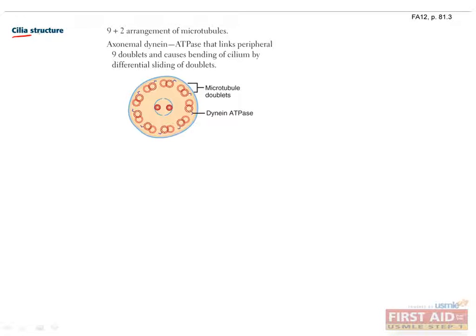Cilia are made from microtubules arranged in a nine dimers plus two singlets formation. In the last slide, I mentioned that dynein is used for retrograde transport along microtubules. However, it can also be used to bind microtubules for a different purpose, to link the doublets together and use ATP to cause them to slide along each other, making the cilium bend.